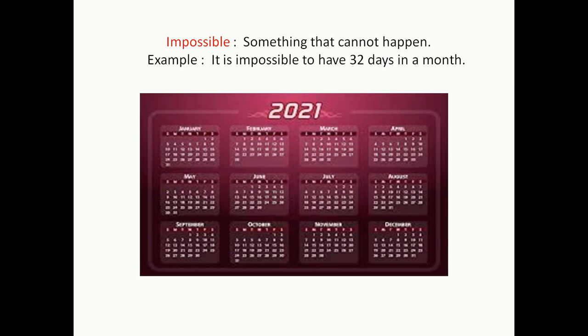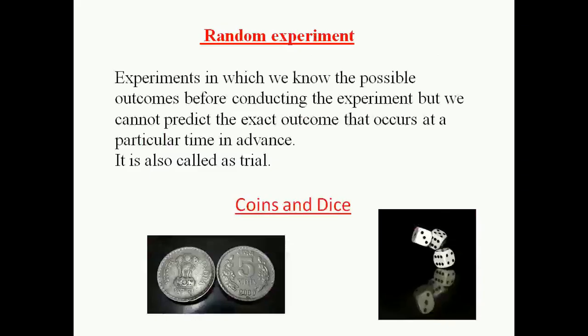Let us discuss a new term: random experiment. What is a random experiment? Experiments in which we know the possible outcomes before conducting the experiment, but we cannot predict the exact outcome that occurs at a particular time in advance. For example, tossing a coin — a coin has two sides, head and tail. Before I toss a coin, I know the outcome could be either head or tail, but the exact outcome is not known. That is considered a random experiment.